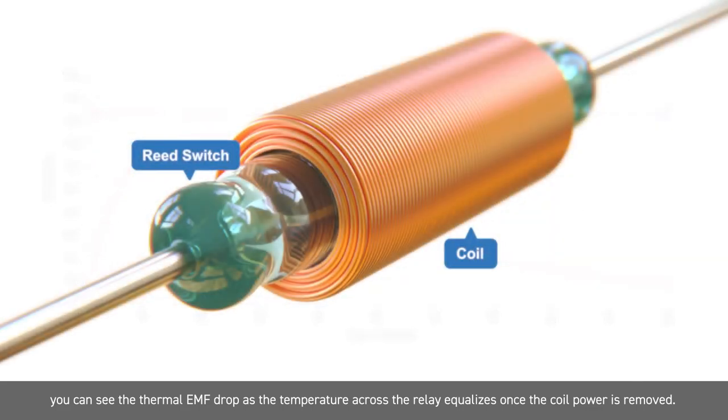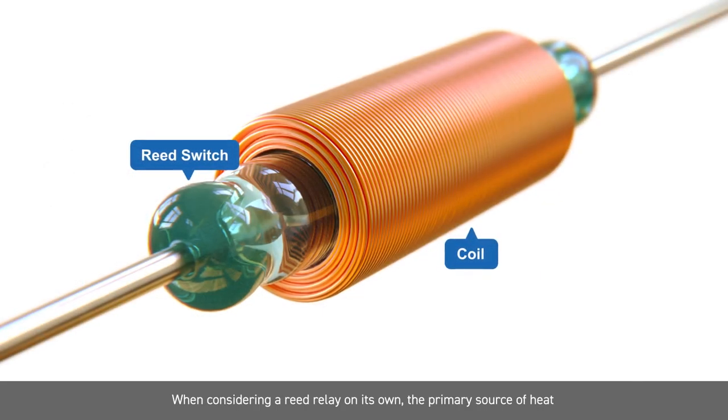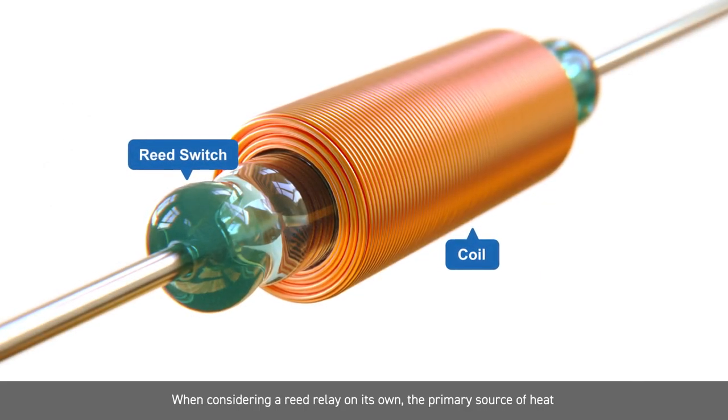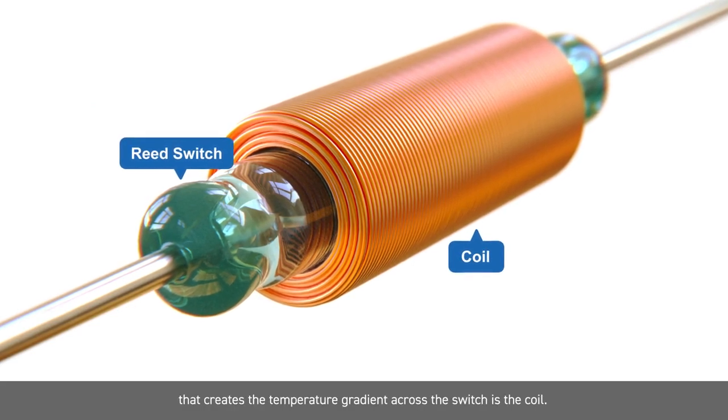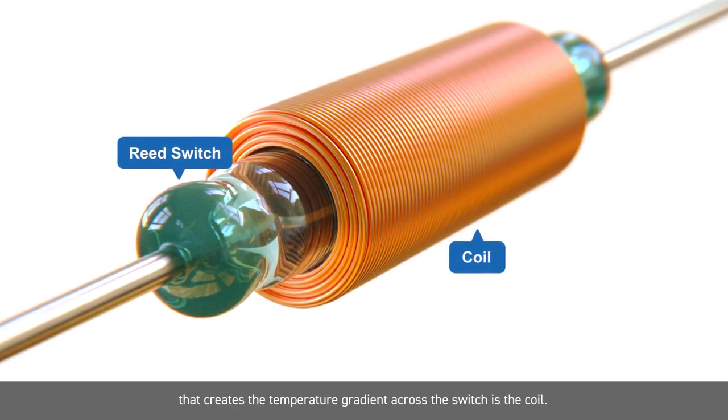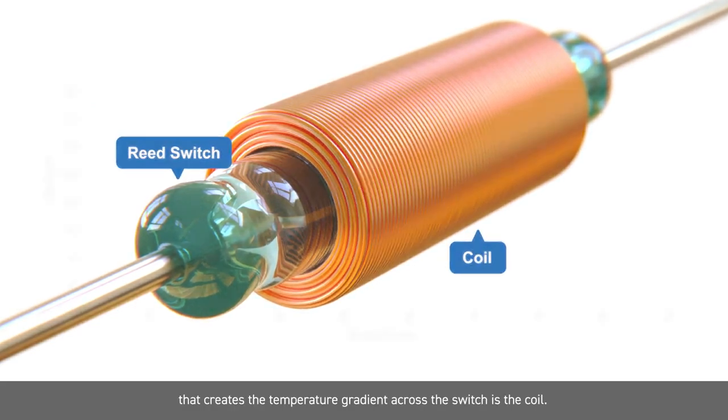When considering a Reed Relay on its own, the primary source of heat that creates the temperature gradient across the switch is the coil.